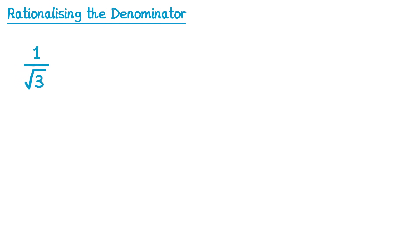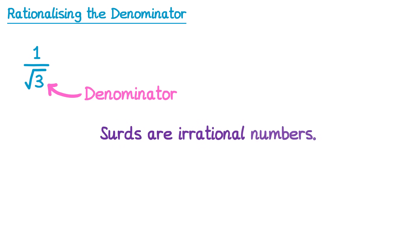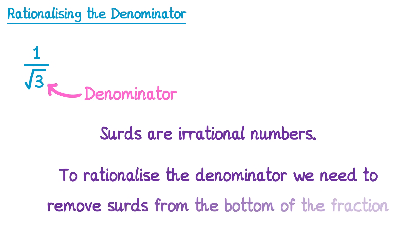Imagine we had the fraction 1 over the square root of 3. The number on the top, the 1, is the numerator, and on the bottom we have square root 3, which is the denominator. For this video we're interested in the denominator. You might remember from a previous video that surds are examples of irrational numbers, so at the moment the denominator here is irrational. You can tell from the title of this video that we want it to be rational, so in order to rationalise a denominator we need to remove the surd from the bottom of the fraction.